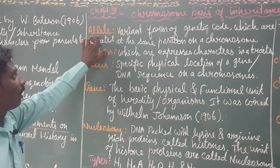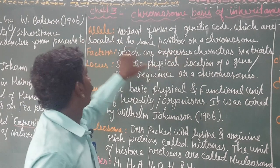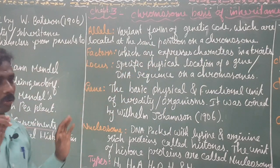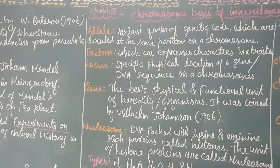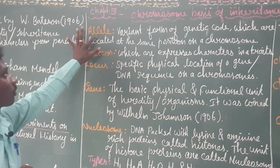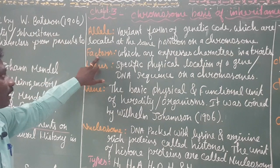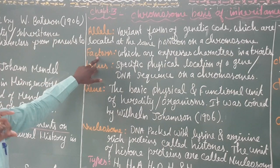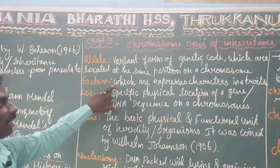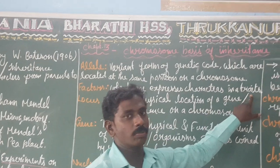An allele is a variant form of a genetic code which is located at the same position on a chromosome. A chromosome has a particular part made up of a genetic code — adenine, guanine, thymine, cytosine. These genetic codes together form genes, and the genes are the factors. Genes represent expressed characters in traits.